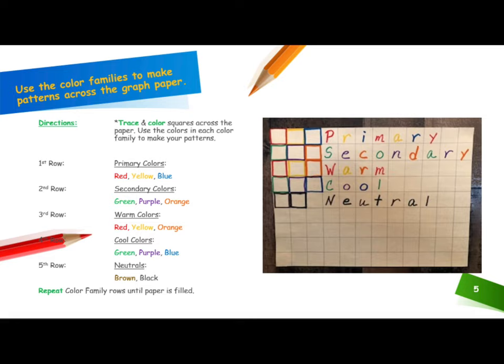Directions: You will trace and color squares across the paper. Use the colors in each color family to make your patterns. In the first row, primary colors: red, yellow, blue. In the second row, secondary colors: green, purple, orange.